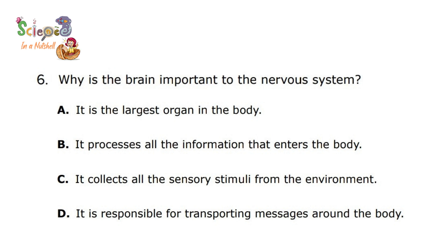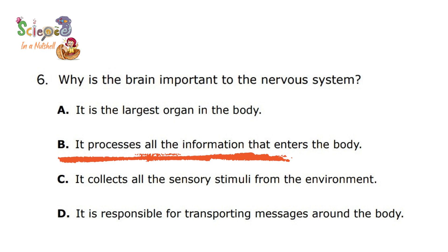Question number 6: Why is the brain important to the nervous system? The answer is that it processes all of the information that enters the body. The important role of the brain is that it processes information. Your sensory receptors collect the information, then send it to the brain to be processed. Then your brain tells your body exactly what to do and what the right decision is.